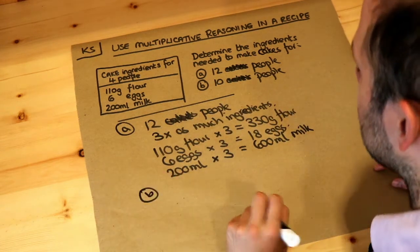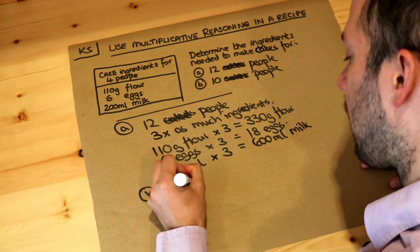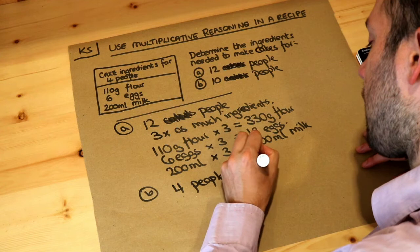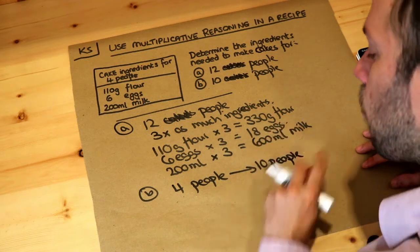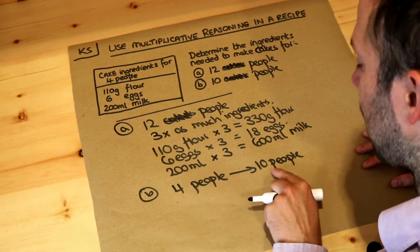Now the second one is more complicated. We want cakes for 10 people. If we're going from four people to 10 people, how many times as much is that? Well, two lots of four is eight, so timesing four by two gives us eight people. But 10 is an extra two people.